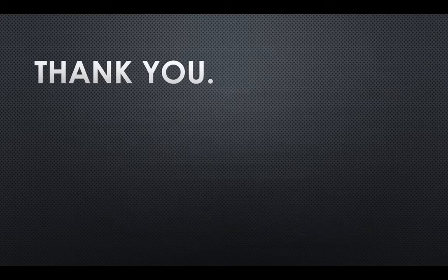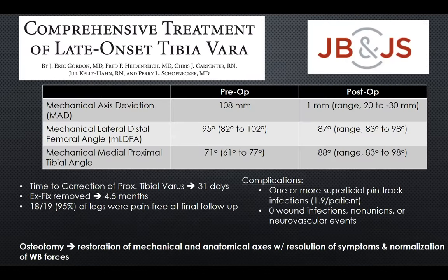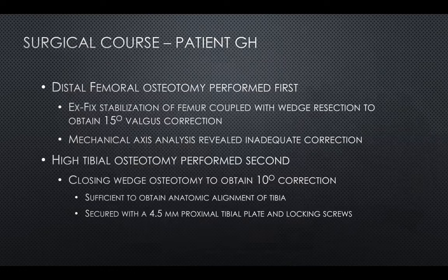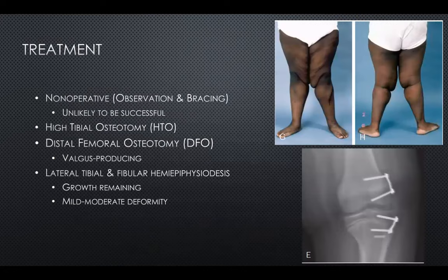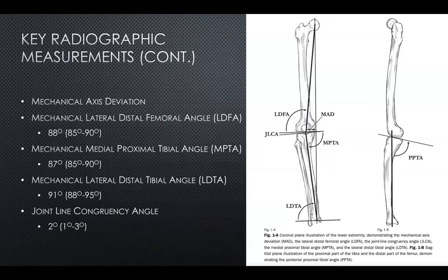A question is raised: could the need for both a femoral and tibial osteotomy have been predicted pre-operatively? The presenter notes the pre-operative planning process is complex and time-intensive. The faculty member clarifies: pre-op discussion already anticipated the likely need for both osteotomies. They hoped to avoid the tibial osteotomy, but after correcting the femur to the desired mechanical axis, the tibia still had nine or ten degrees of error, making the tibial osteotomy necessary.